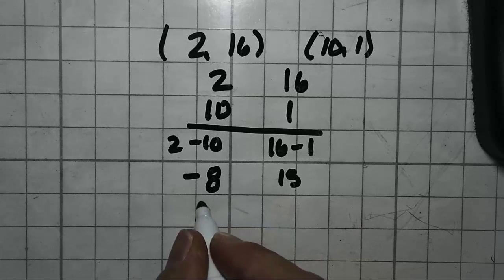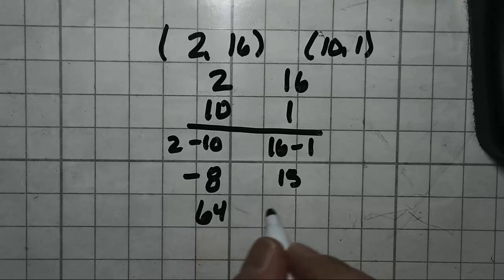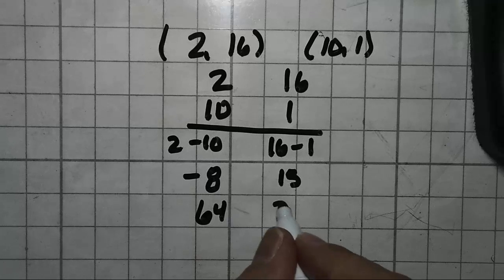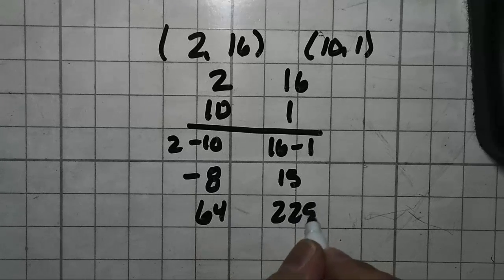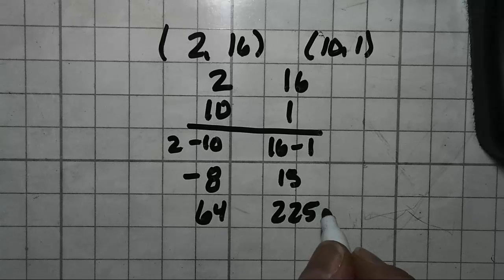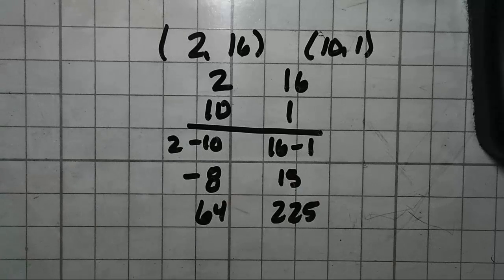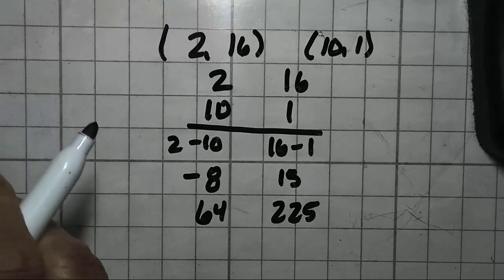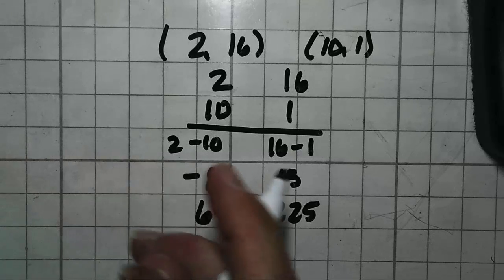Next I'm going to square it. Negative 8 times negative 8 is 64. And 15 times 15 is 225. Again, remember, if you don't know your squares, your square numbers, please make sure you spend some time and learn them up to 15. It's really going to help you a lot.